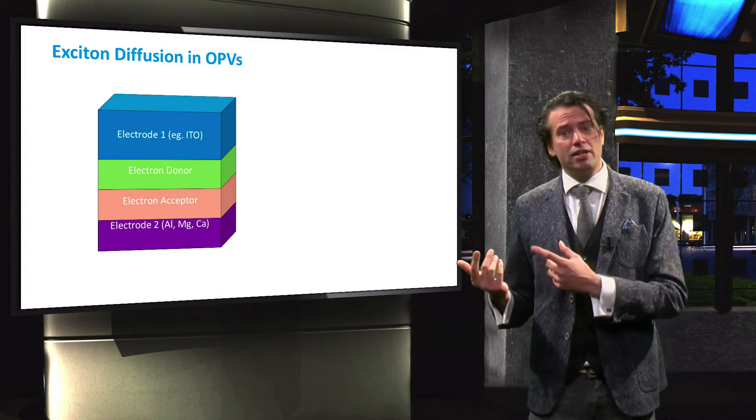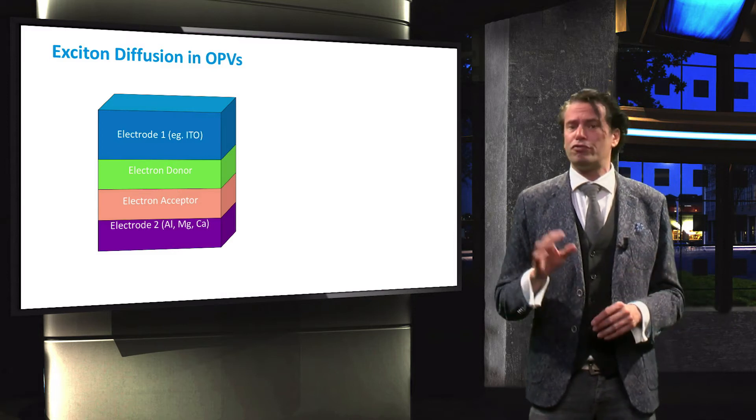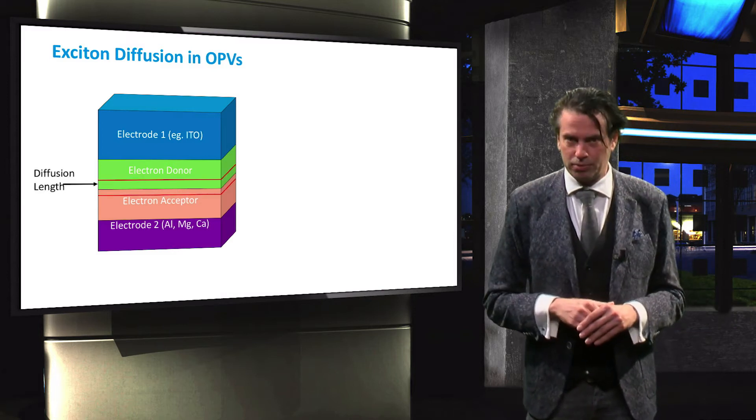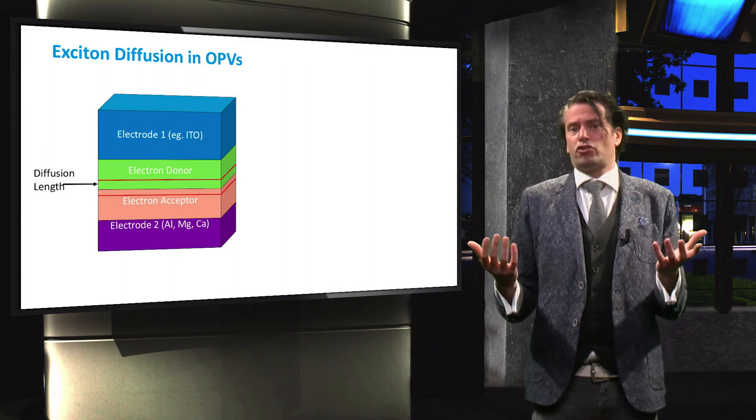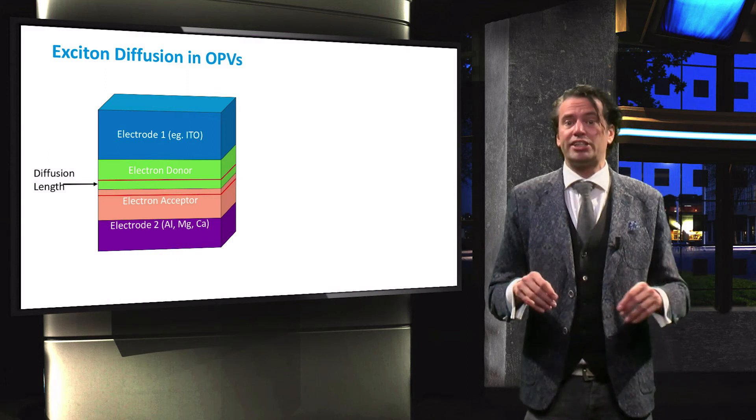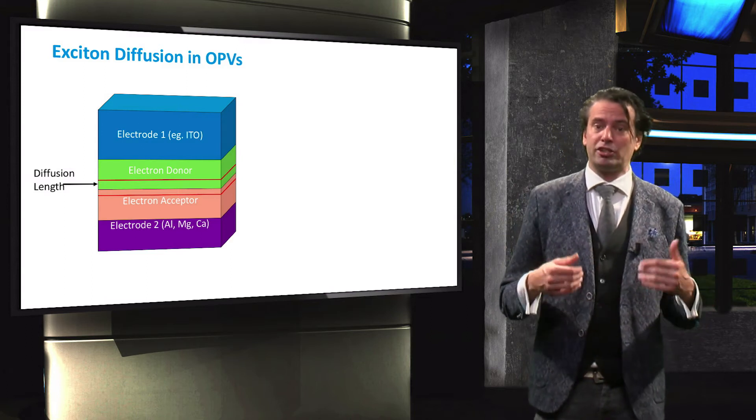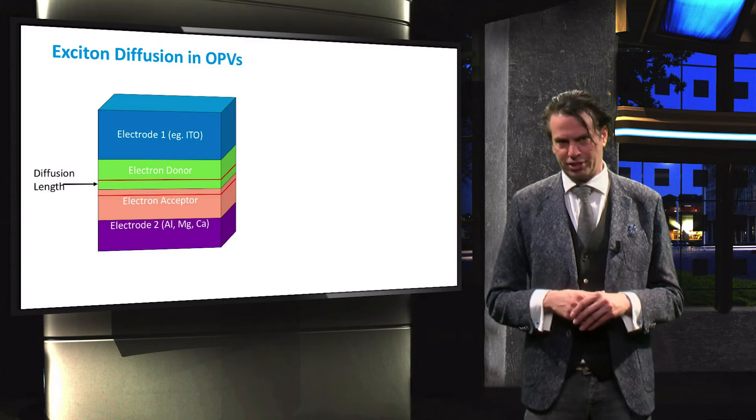On the other hand, the inherent nature of excitons to recombine easily gives a diffusion length of around 20 nm. The total thickness of a solar cell absorber layer is limited by its diffusion length, which in this case is much shorter than what is required for satisfactory absorption of incident light.